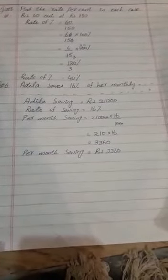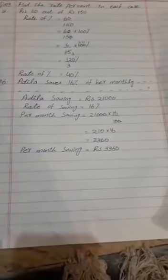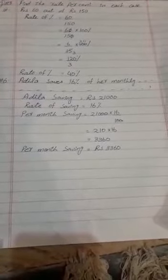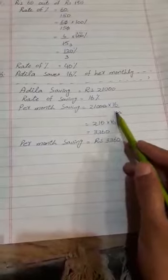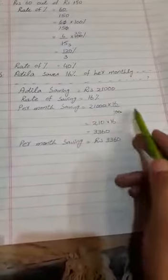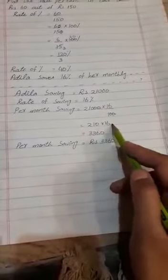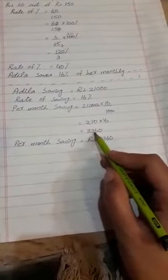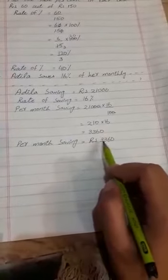Adila saving: She earns Rs. 21,000. Rate of saving is 16 percent. Per month saving: multiply 21,000 by 16 percent. For 16 percent, put 16 by 100. Multiply 210 by 16, equals 3360. Per month saving, Adila saves Rs. 3360.